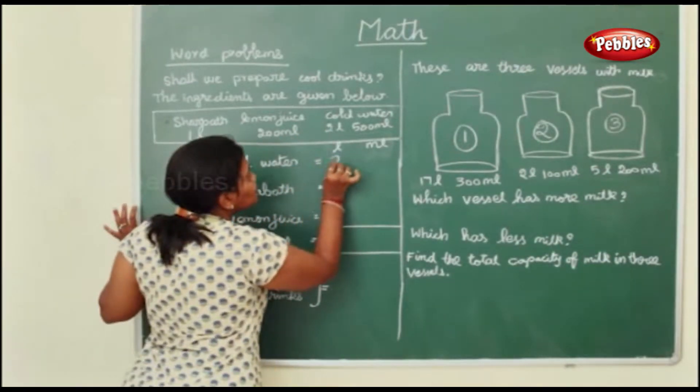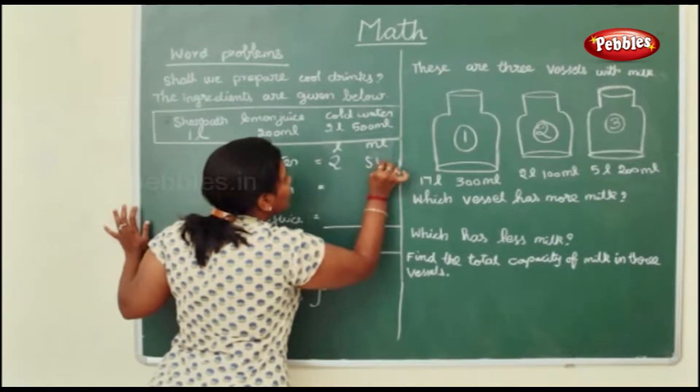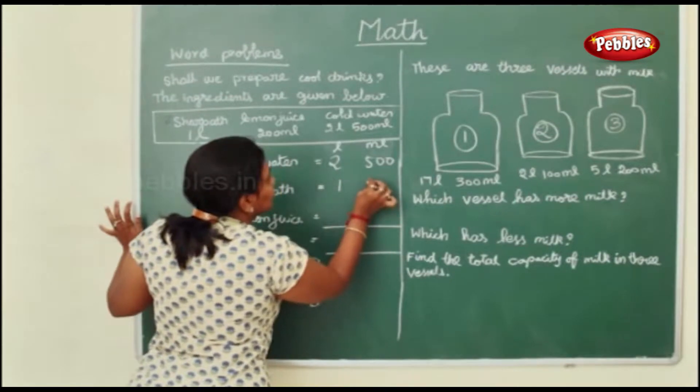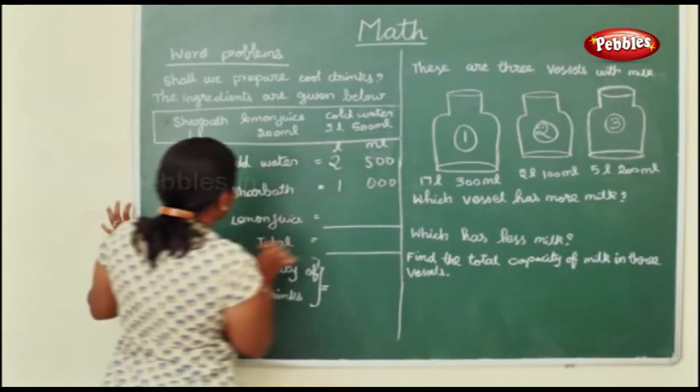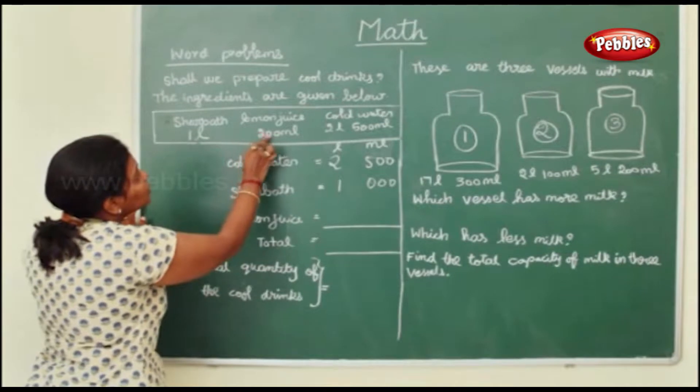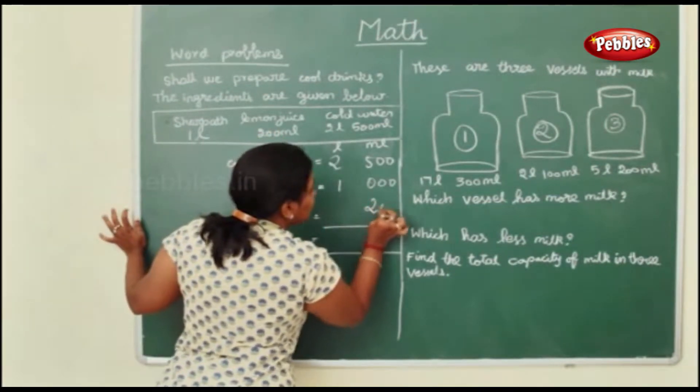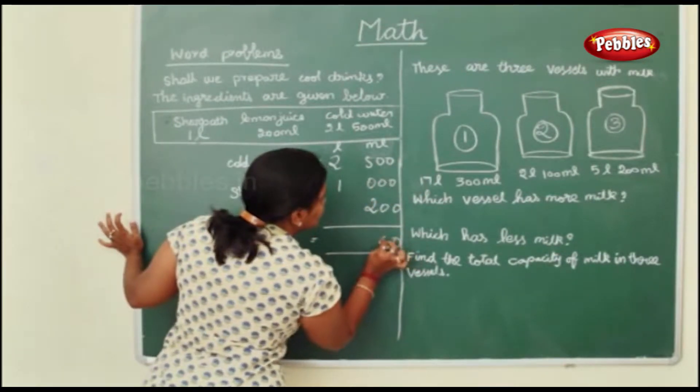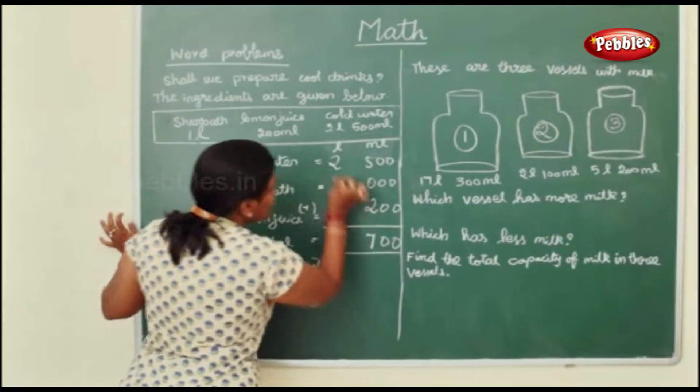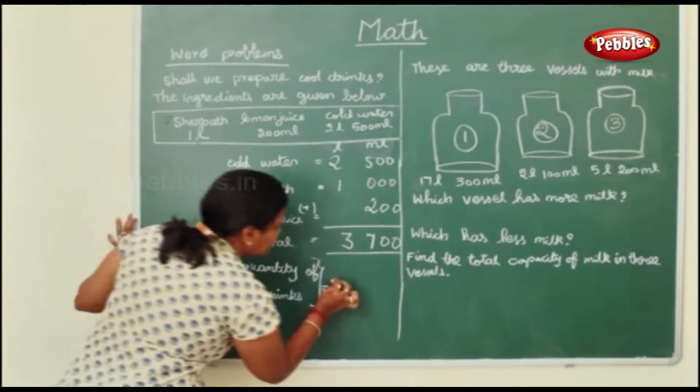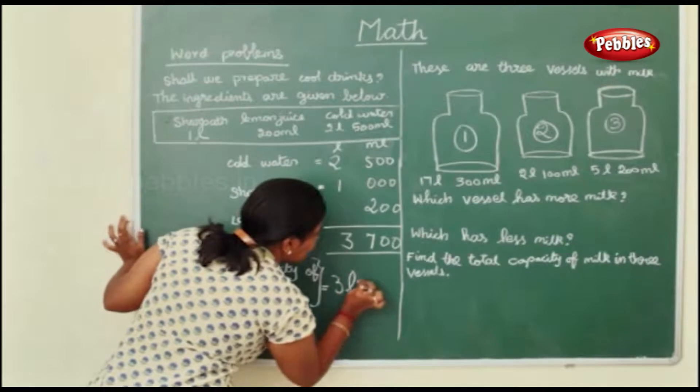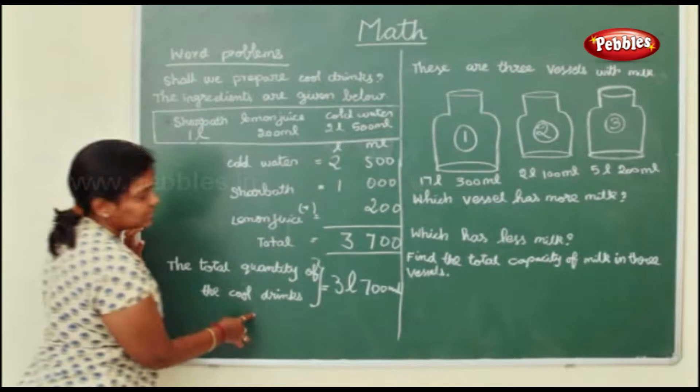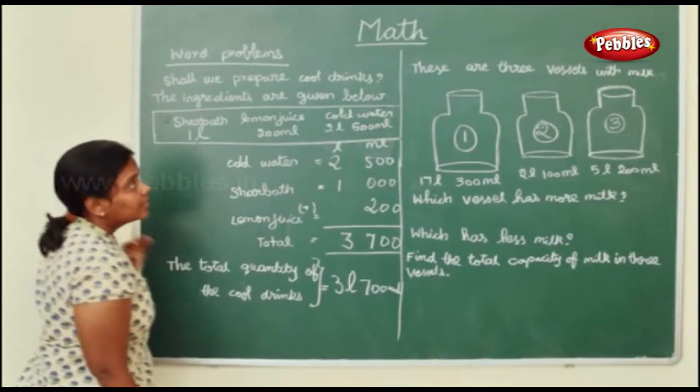So cold water first is 2 liter 500 ml and then sharbat is 1 liter. Lemon juice is just 200 ml. I am going to add this up. 2 plus 1 is 3. So total you have 3 liters and 700 milliliters. The total quantity of the cold drink is 3 liters and 700 milliliters.